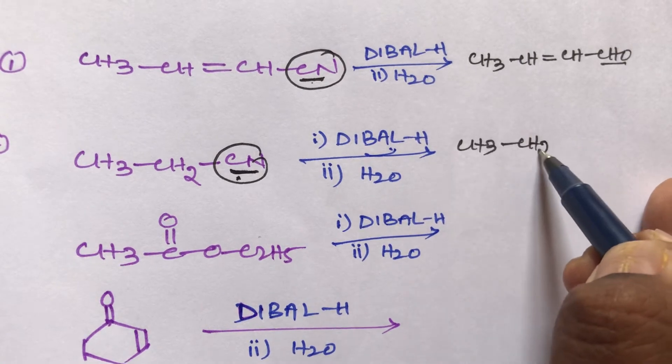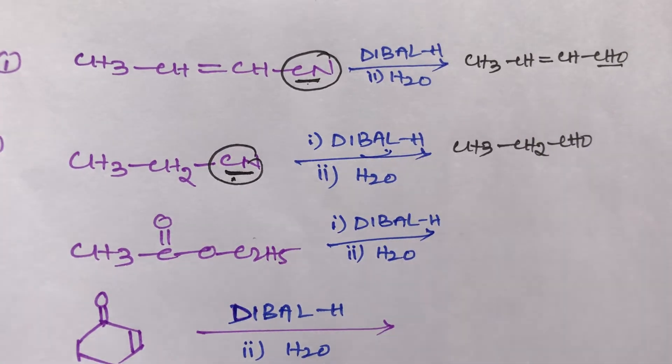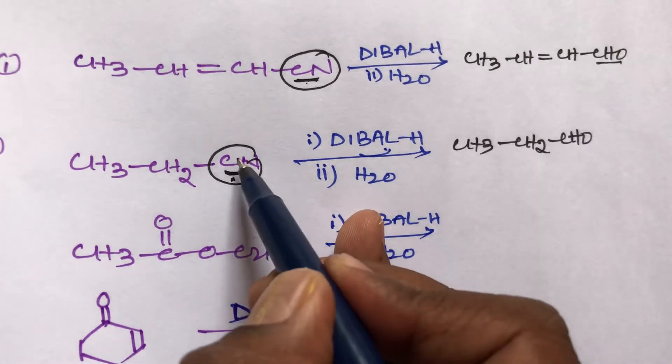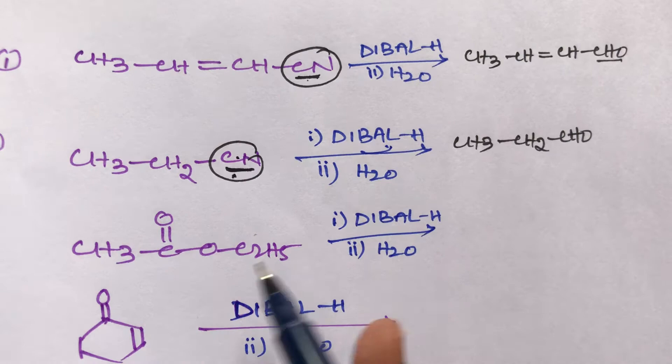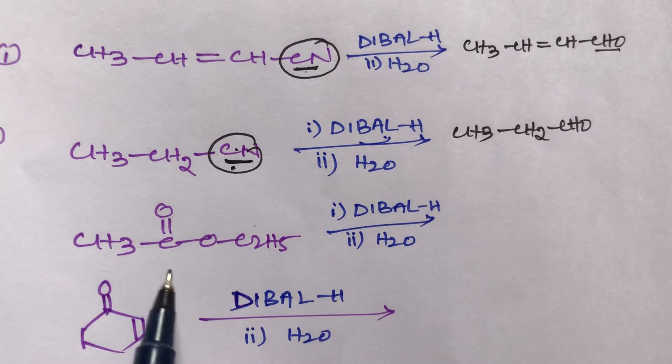Second example: CH3-CH2-CN also has a cyanogroup. DIBAL added can reduce only the cyanogroup. This cyanogroup is converted into an aldehyde — CH3-CH2-CHO — that is propanal.